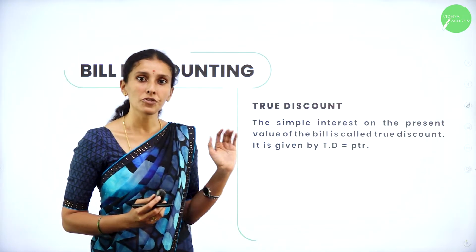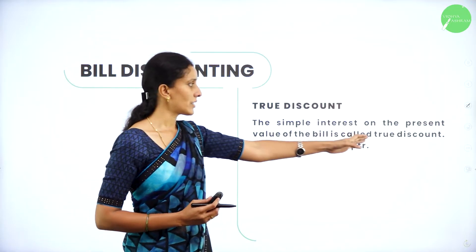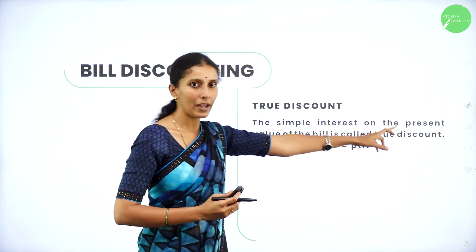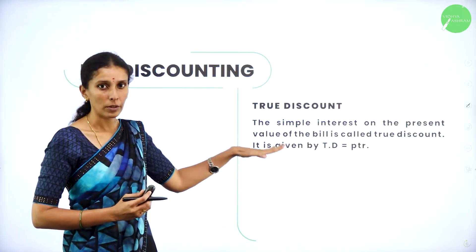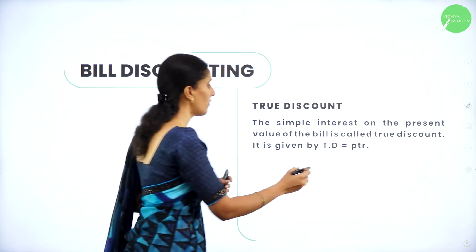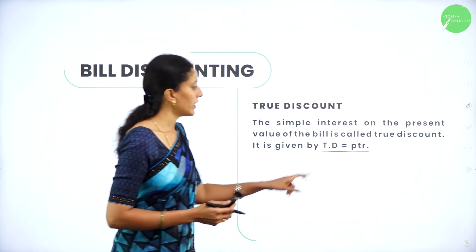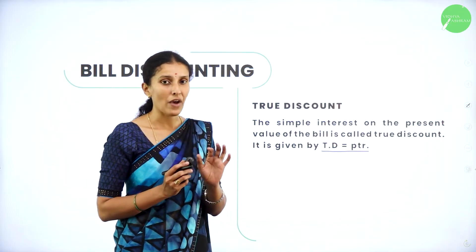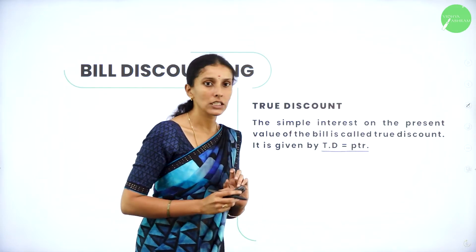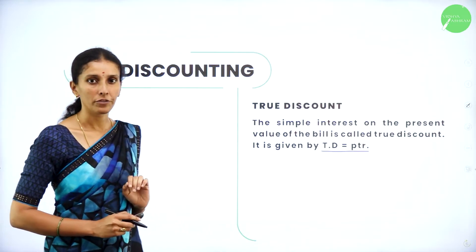Next, we have true discount. What do you mean by true discount? It is the simple interest on the present value of the bill. The interest applied on the present value of the bill is your true discount, and it is given by the formula TD = PTR, where P is the present value of the bill, T is the time taken, and R is the rate of interest.